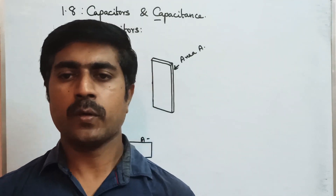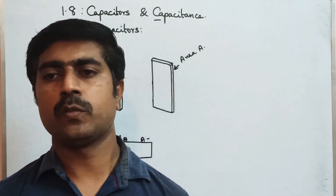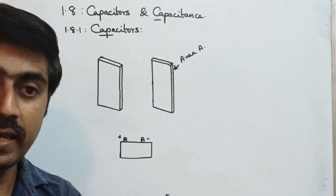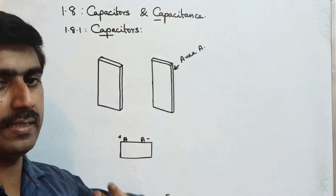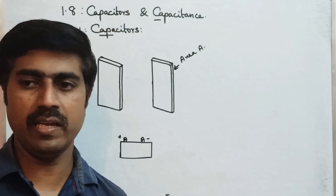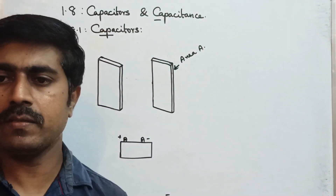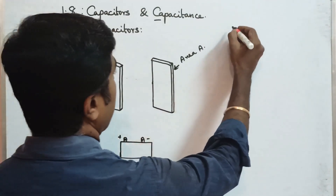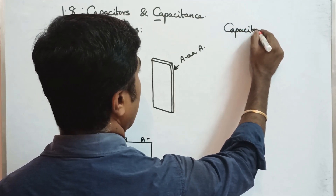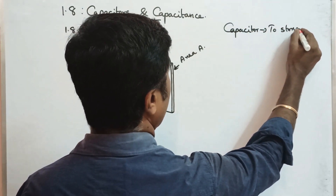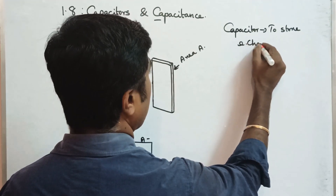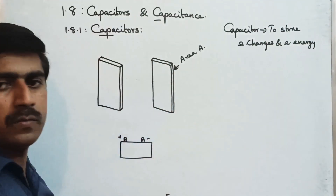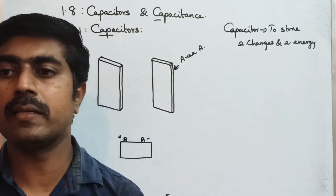Hi students, so today we are looking at topic number 1.8 in chapter on capacitors and capacitance. A capacitor is a device used to store electric charge and electric energy. So keep on, and we are going to look at the parallel plate capacitor.